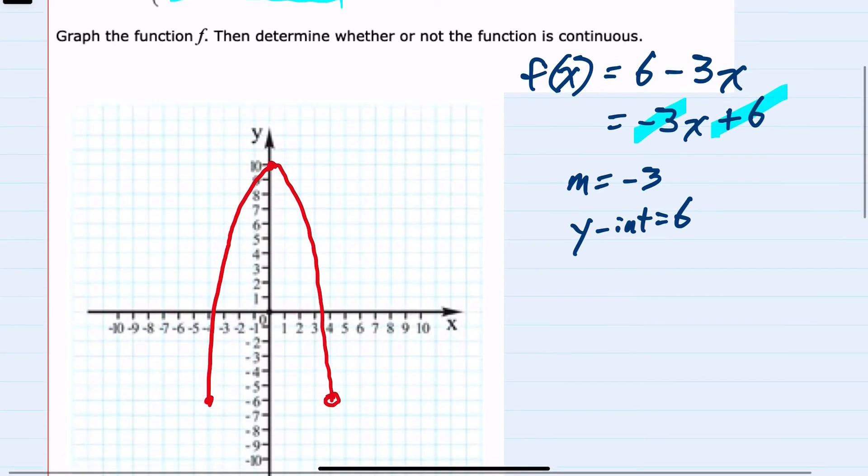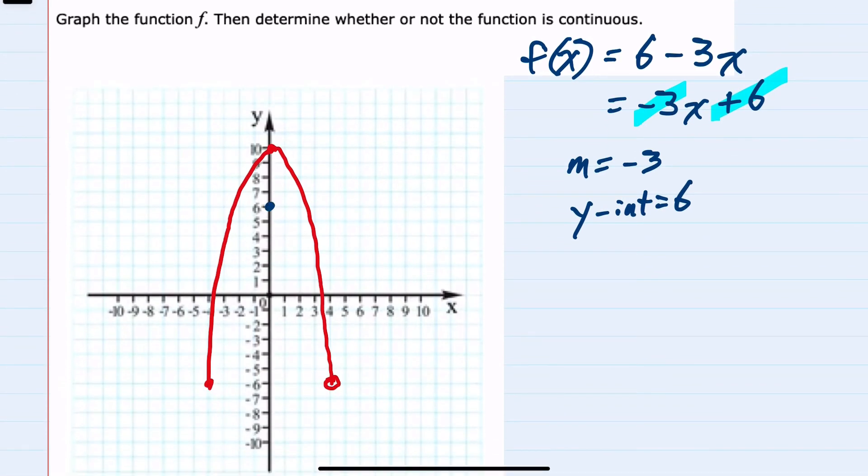So I can graph this line as having a y-intercept at 6. The slope of negative 3 I could think of as negative 3 over 1, meaning from here I would go down 3 over 1. Repeating down 3 over 1, I can see that they actually do cross out here. This would be my line.